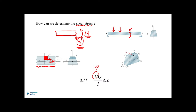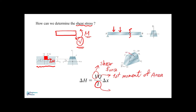The formula for the horizontal shearing force, denoted as delta H, is obtained by the equation: delta H equals V times Q divided by I, times delta x. Here, V is the shear force applied to the beam, Q is the first moment of area, I is the centroidal moment of inertia of the entire section, and delta x is shown in the figure.